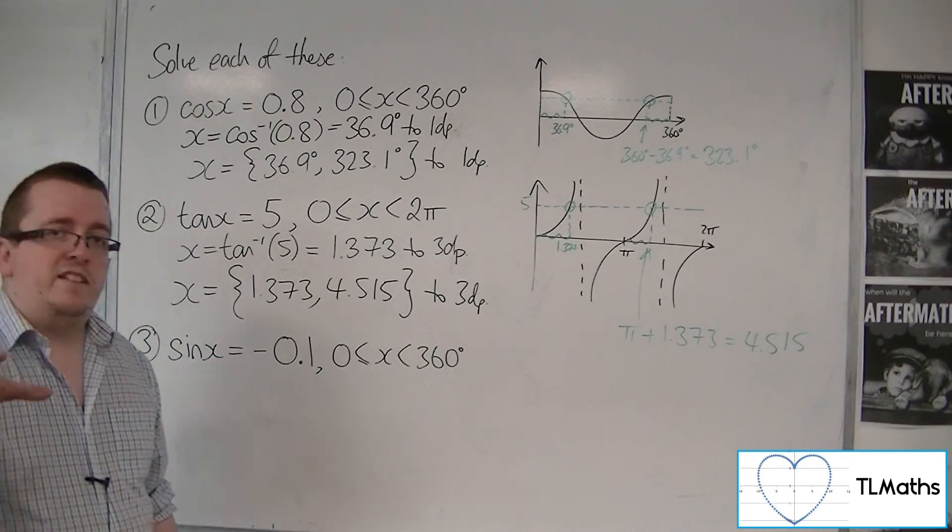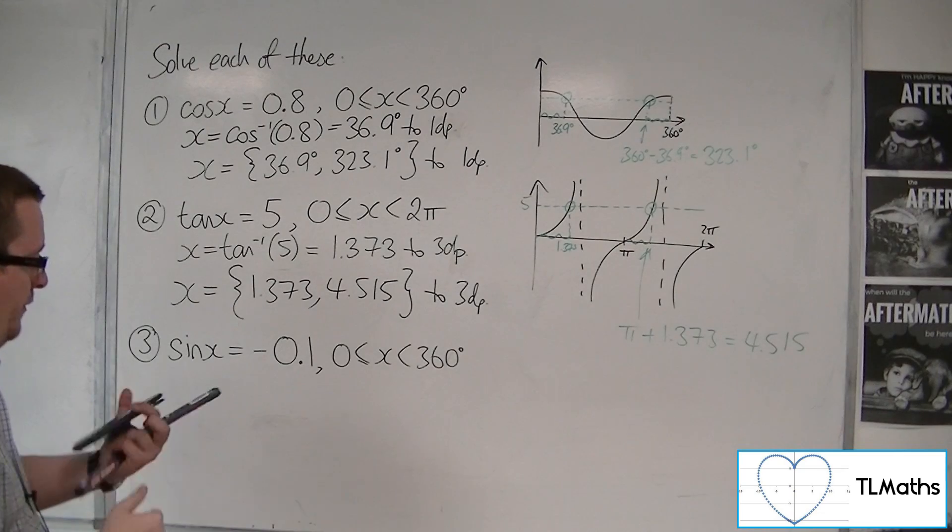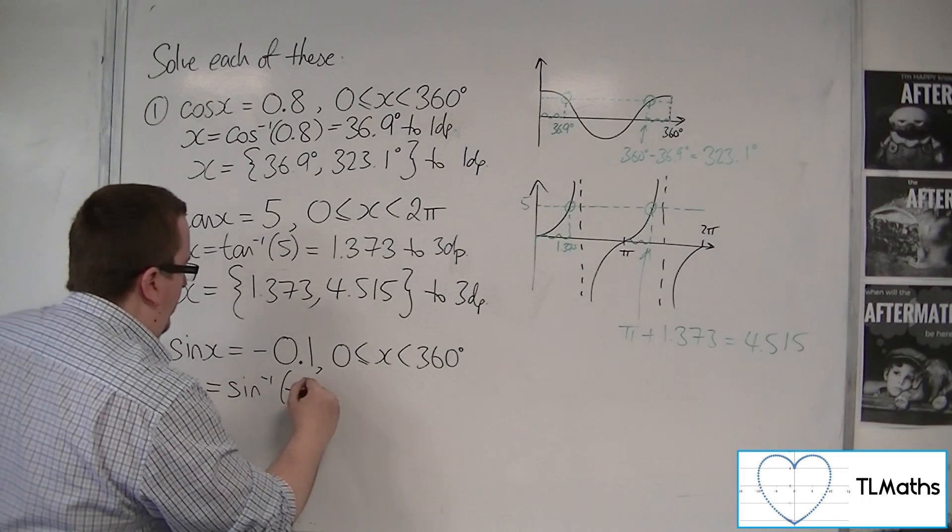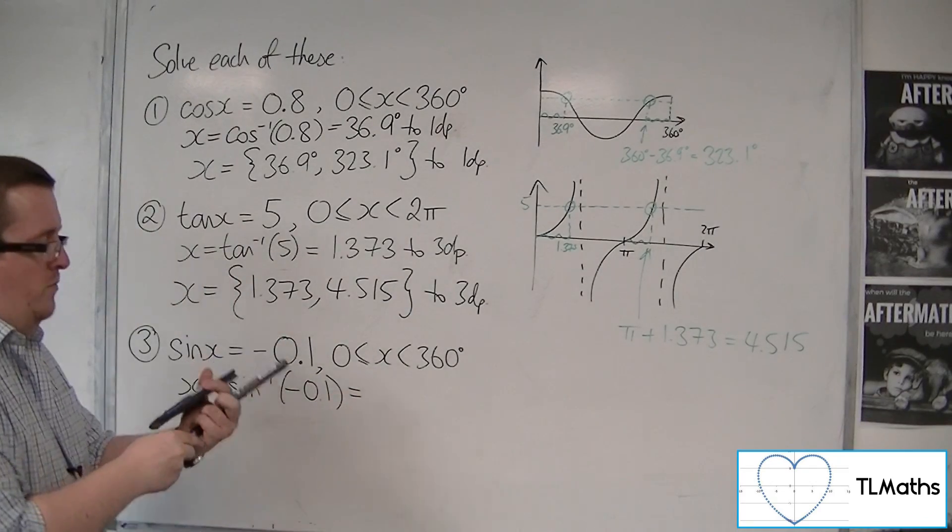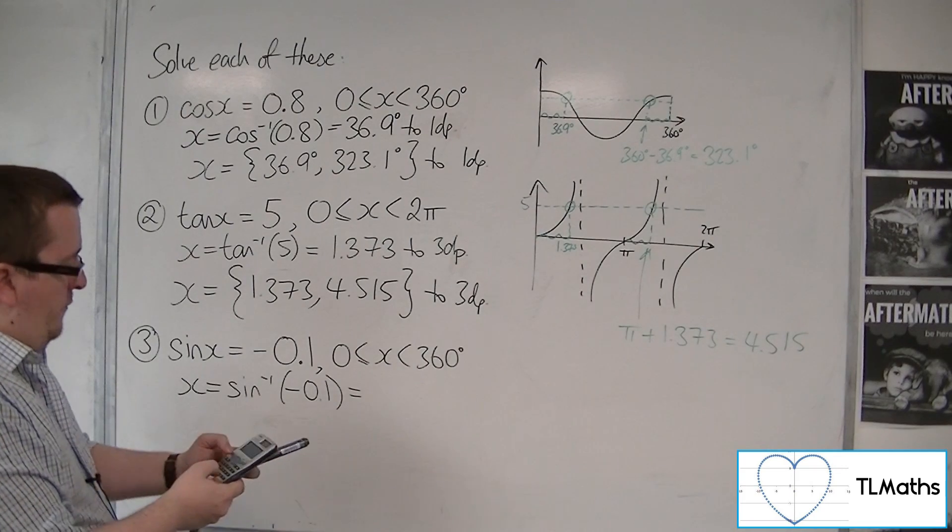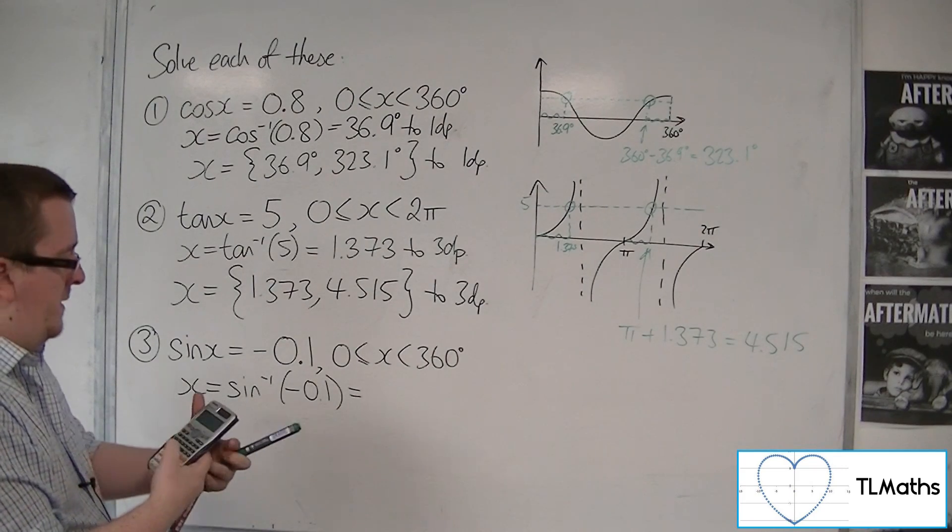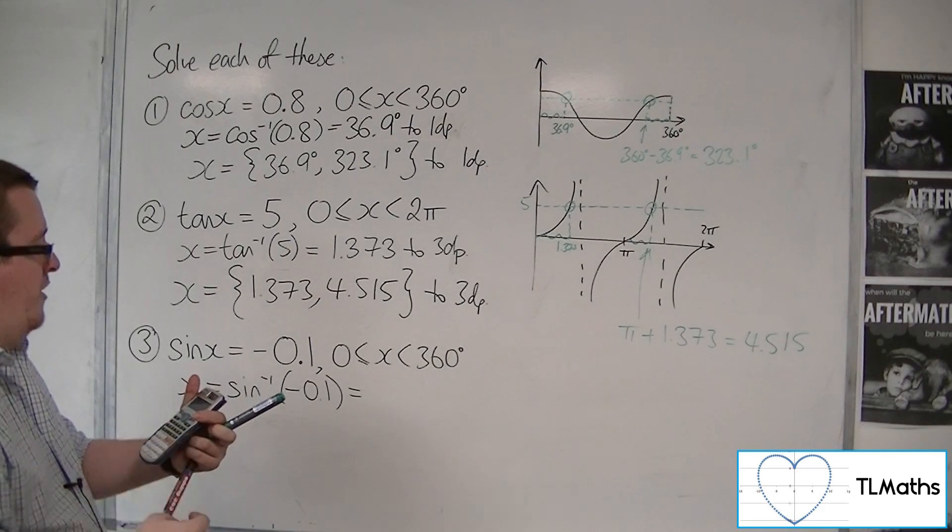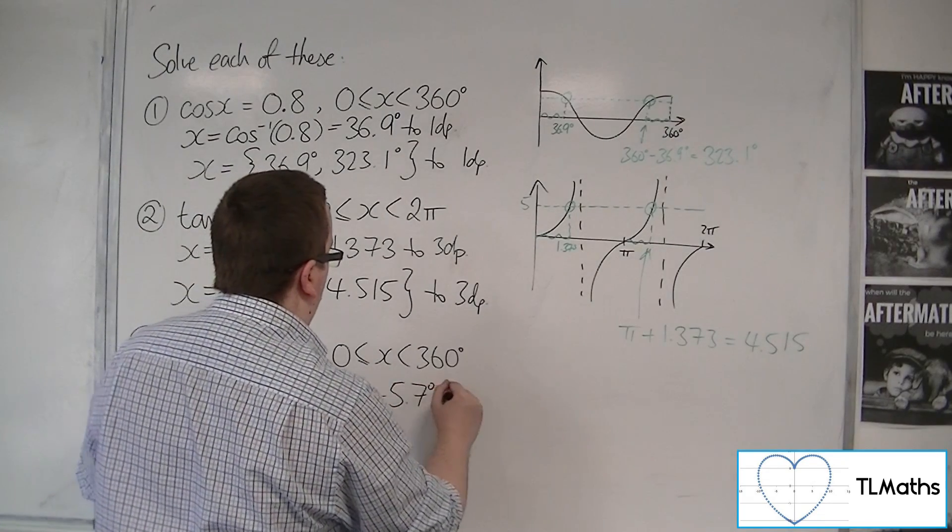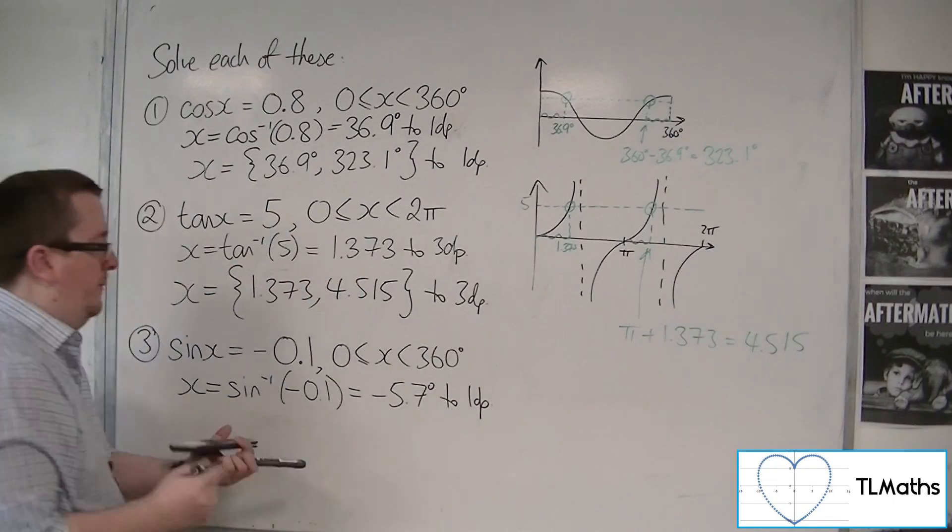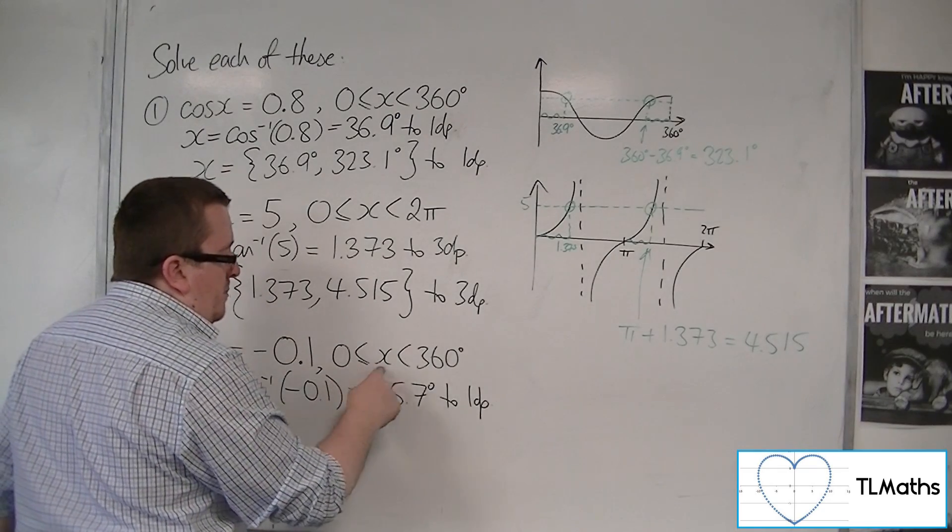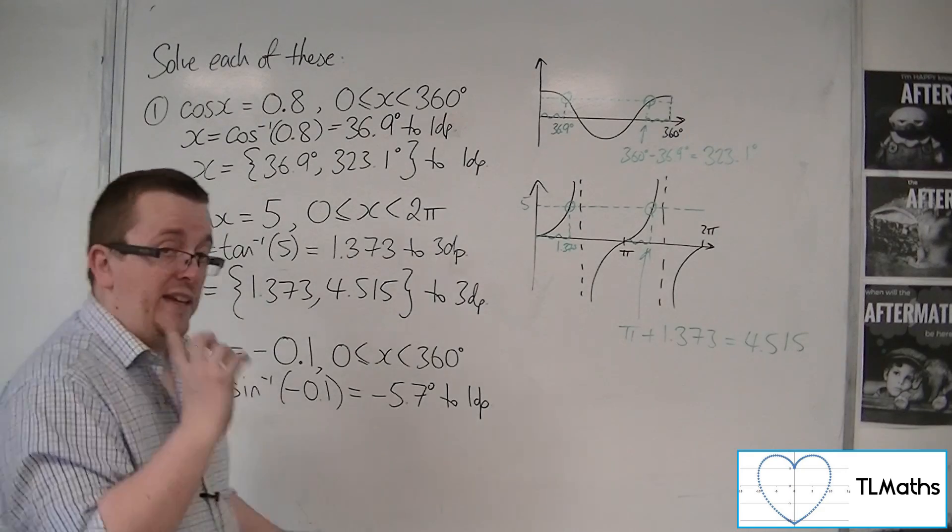Now, this third one is going to throw a spanner in the works, so we need to be careful with this one. We are going to inverse sine both sides. We get inverse sine of -0.1. We check whether we're in degrees or radians. We're back into degrees, so shift mode and then number 3 for degrees. Inverse sine of -0.1 is actually -5.7 degrees to 1 decimal place. Notice that that answer is not between 0 and 360.